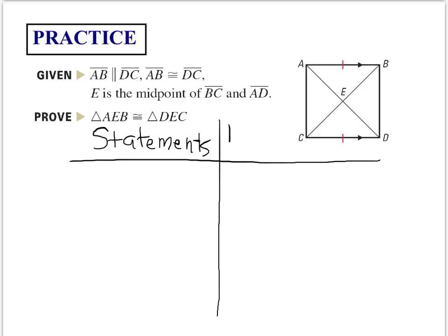I'm not going to complete this whole proof right now — make sure you're copying it down so we can finish it together in class. From the given information: side AB is parallel to DC (shown by the arrow marks), side AB is congruent to DC (shown by the red congruency marks), and E is the midpoint of both BC and AD. Since E is the midpoint, the segments on each side are equal — marking BE congruent to EC and AE congruent to ED.